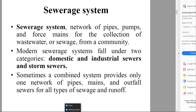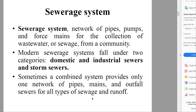Now we will discuss different sewer systems. A sewer system is basically a network of pipes, pumps, and force mains for the collection of wastewater. Modern sewer systems fall under two categories: domestic and industrial sewers, and storm sewers. Sometimes a combined system is provided — a single pipe network for all types — domestic, industrial wastewater, and storm water runoff.